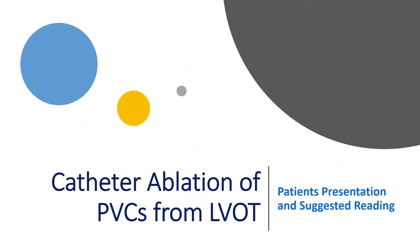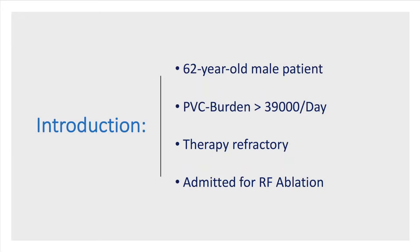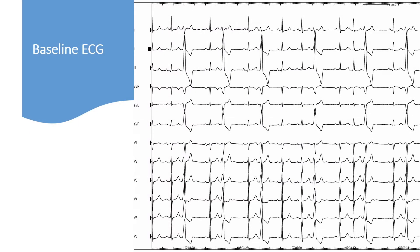Today, we will discuss together three patients with frequent ventricular extrasystole from left ventricular outflow tract. The first patient is a 62-year-old man with frequent ventricular extrasystole with a PVC burden over 39,000 per day, which was refractory to medical therapy and admitted for RF ablation. The baseline ECG of this patient shows frequent monomorphic PVC, inferior axis with a transition zone around V3.